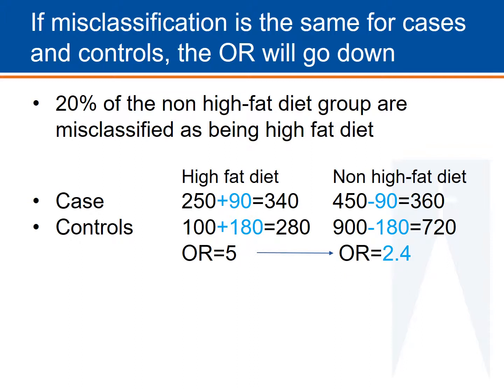This is because when the misclassification is the same in cases and controls, misclassification waters down the odds ratio and makes the two groups look like they are more similar than they really are.